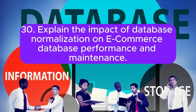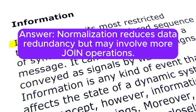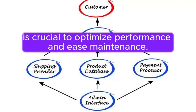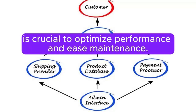Question 30: Explain the impact of database normalization on e-commerce database performance and maintenance. Normalization reduces data redundancy but may involve more join operations. In an e-commerce context, striking a balance between normalization and denormalization is crucial to optimize performance and ease maintenance.